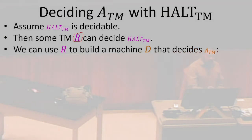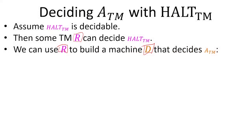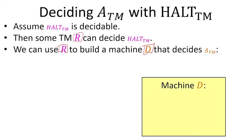We're going to show that we can use R — whatever that machine is, I don't care what it is except that it decides HALT — to build a new machine D which decides ATM. Here's our machine D that's going to solve ATM for us. It accepts two things as input: a machine description and an input string.